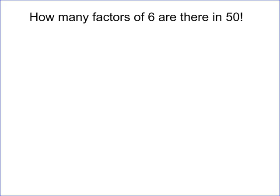So to solve this problem, we determine how many 3's are in 50 factorial. We start with 3 to the first: 3 goes into 50 sixteen times. There's a remainder, but we don't worry about remainders. So there are 16 instances of 3 to the first.